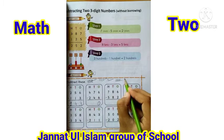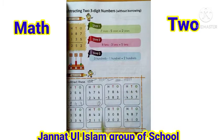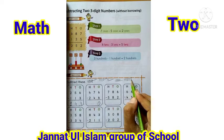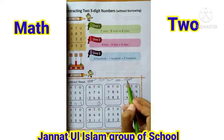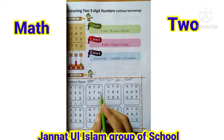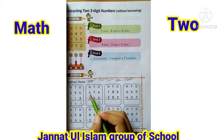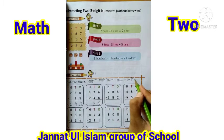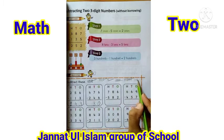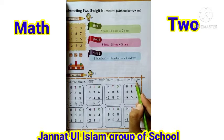Tens میں seven ہے، seven lines draw کریں: one, two, three, four, five, six, seven۔ Four lines کاٹ دیں: one, two, three, four۔ Remaining lines: one, two, three — seven minus four is equal to three۔ Hundreds میں four ہے، four میں سے two minus کریں گے: one, two, three, four — two lines کاٹ دیں، remaining lines one اور two بچیں۔